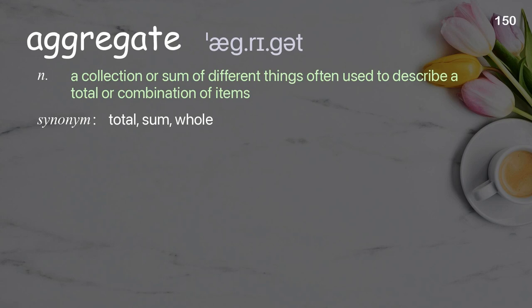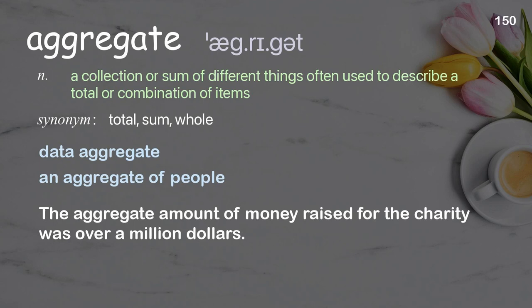Aggregate: a collection or sum of different things, often used to describe a total or combination of items. Examples: data aggregate, an aggregate of people. The aggregate amount of money raised for the charity was over a million dollars.